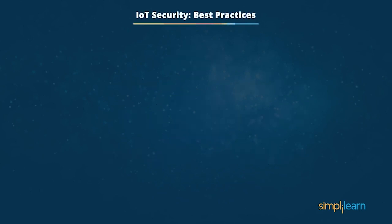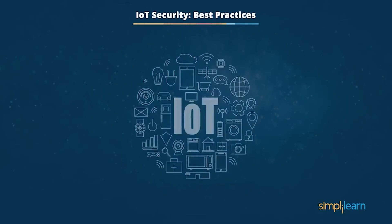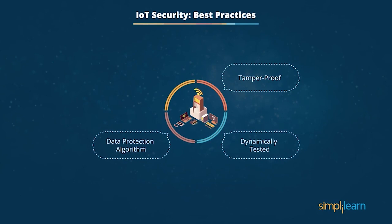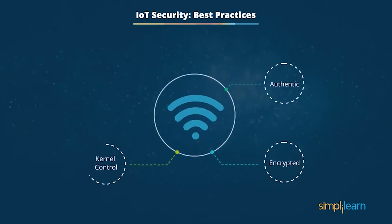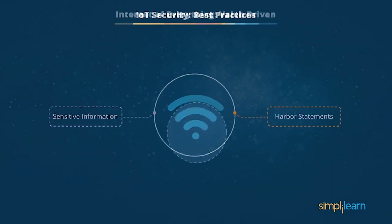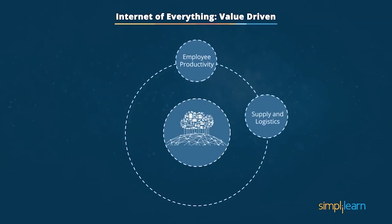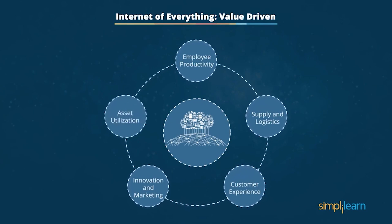IoT security best practices: hardware should be tamper-proof, undergo dynamic testing with specific data protection algorithms, and be updated on firmware and patches. Network components must be authentic with encryption, kernel controls, and division of networks into segments. Other security measures include privacy protection for sensitive information and regulations like safe harbor statements. The key value drivers for the Internet of Everything include employee productivity, supply and logistics, customer experiences, innovation, time to market, and asset utilization — all tightly linked to generate new revenue gains for any enterprise.